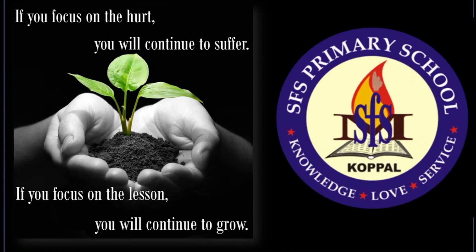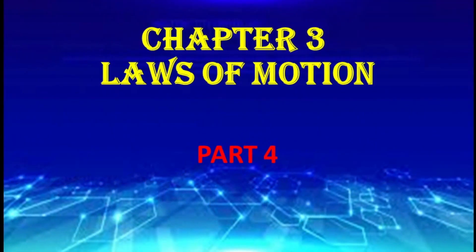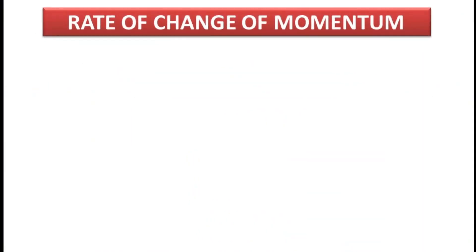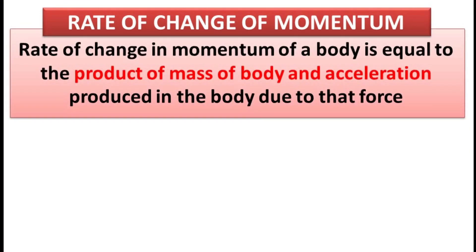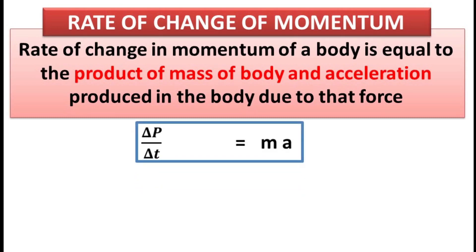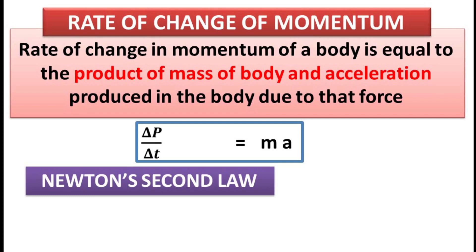Good morning students and welcome to the fourth part of our third chapter, Laws of Motion. In today's class let us study Newton's second law of motion. This class is the continuation of the previous class. We have studied rate of change of momentum — rate of change of momentum is the product of mass and acceleration, that means ΔP divided by ΔT is equal to M into A.